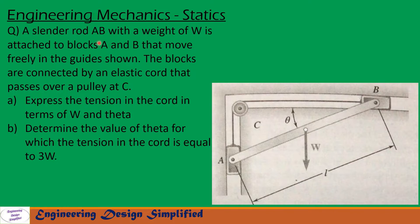Today's problem is: a slender rod AB with a weight of W is attached to blocks A and B that move freely in the guides shown. The blocks are connected by an elastic cord that passes over a pulley at C. Part A: Express the tension in the cord in terms of W and theta. Part B: Determine the value of theta for which the tension in the cord is equal to 3W. Let us see in the coming slides how to solve this problem.